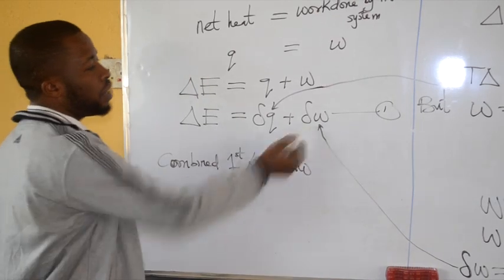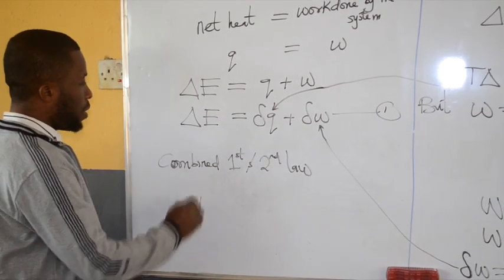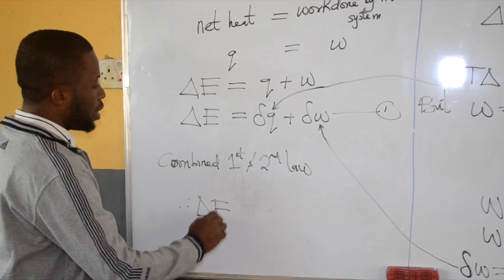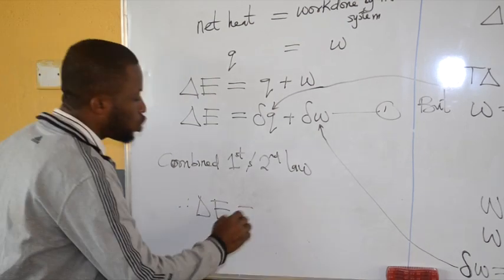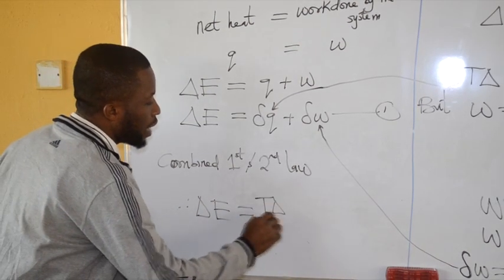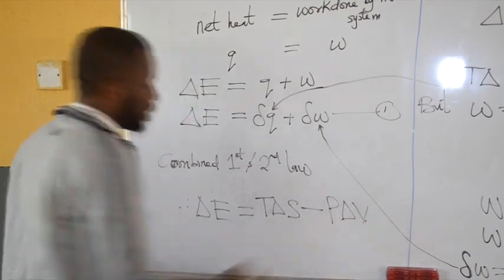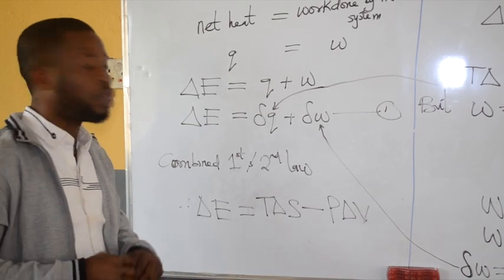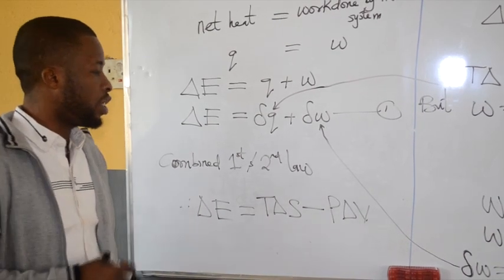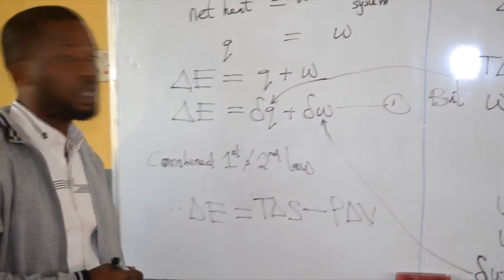Replacing the value of W, I will have therefore that internal energy is also equal to T delta S minus P delta V. So this is another equation for internal energy: T delta S minus P delta V.